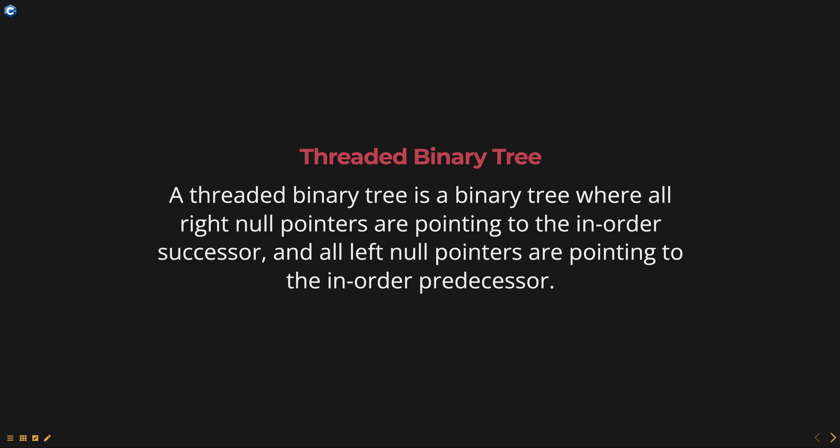There are two types of threaded binary trees: in-order threaded binary tree and pre-order threaded binary tree. The in-order threaded binary tree is the most commonly used type and is useful for in-order tree traversals. In this type of threaded binary tree, the leftmost node and the rightmost node are both threaded back to the root node, forming a circular loop.